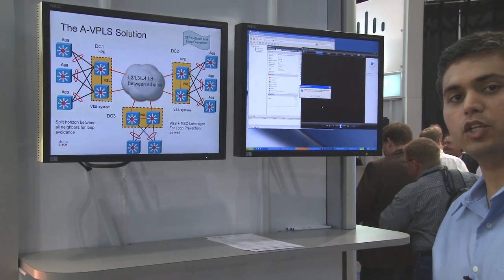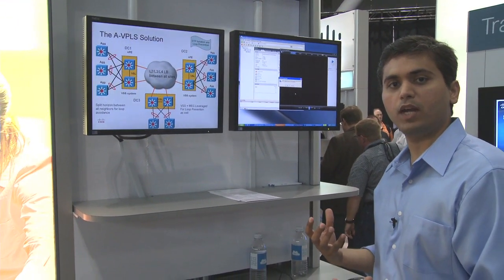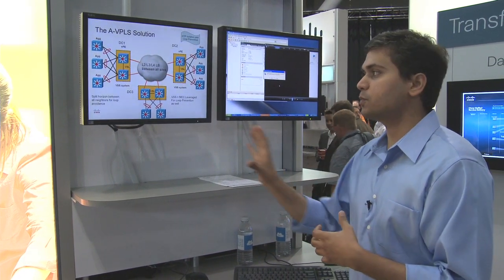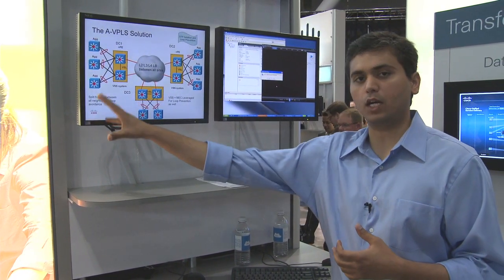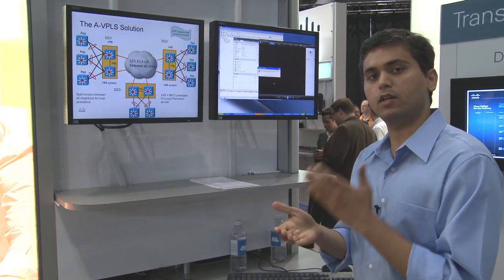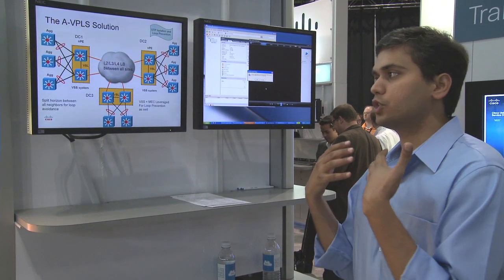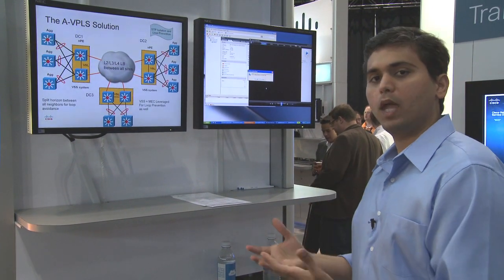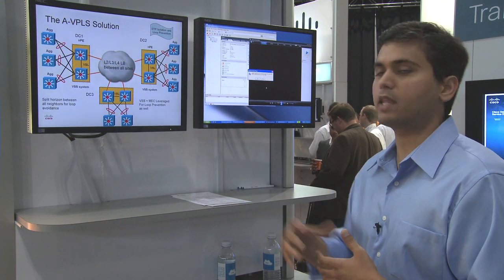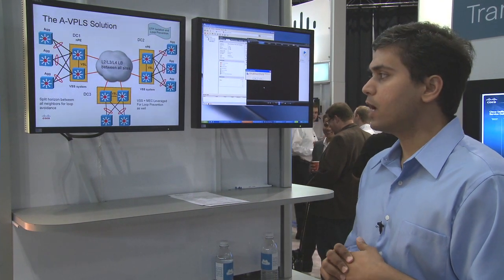Advanced VPLS is used to extend your layer two domains seamlessly across data centers, while at the same time ensuring that spanning tree is isolated within the data center. It provides true redundancy, resiliency, and packet load balancing, which we deliver with the advanced VPLS solution from Cisco.